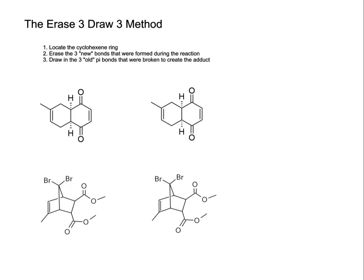Now I'm going to show you how to determine what the original conjugated diene and dienophile were when you're looking at the Diels-Alder adduct. I call this method the Erase-3-Draw-3 method. The first thing we're going to do is locate the cyclohexene ring. Then we're going to erase the three new bonds that were formed during the reaction and draw in the three old pi bonds that were broken to create the adduct. Remember that we formed one new pi bond as a result of the Diels-Alder reaction. That's going to be our starting point for finding the new bonds that joined the two starting materials together. So we're going to look diagonally across from that new pi bond, and we're going to erase those two new bonds. That pi bond is also one of the new bonds, so that's the third thing that we're going to erase.